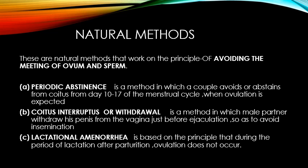The last natural method is lactational amenorrhea, based on the principle that during the period of lactation — the breastfeeding period after delivery of the child — ovulation does not occur. With no formation of ova, there is no fusion between male and female gametes, no fertilization. This is again a natural method by which we can avoid fertilization and control the birth rate. These three methods come under the heading of natural methods.